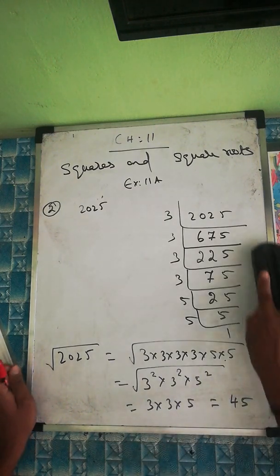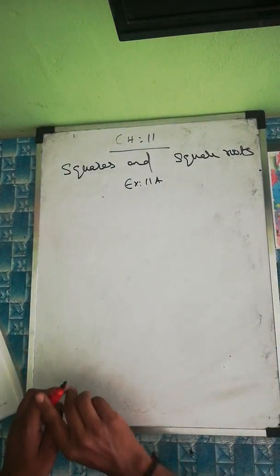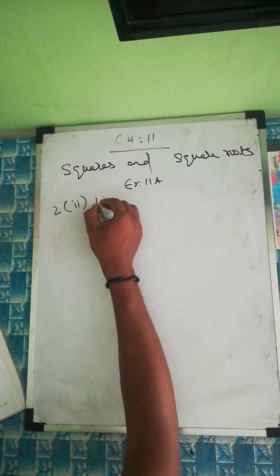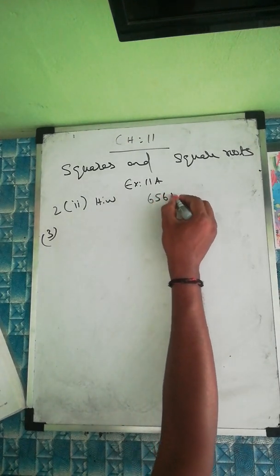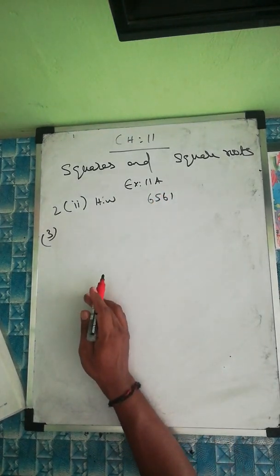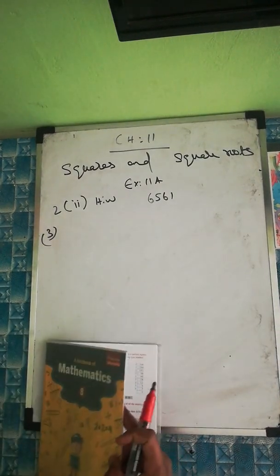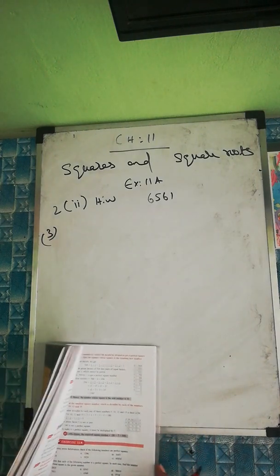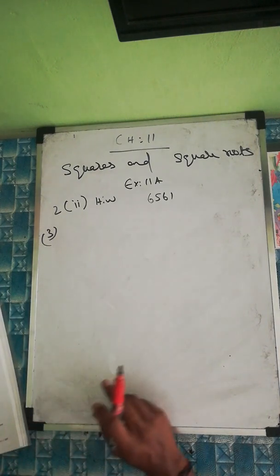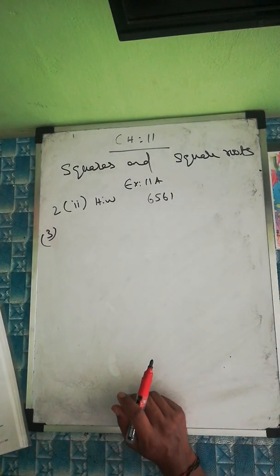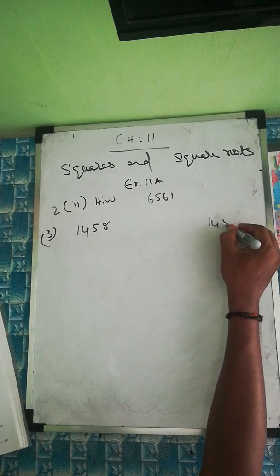The second part of question 2, which is 6561, is your homework — try it yourself. Now moving to question number 3: find the least number by which the given number should be multiplied to get a perfect square number, and in each case find the number whose square is the resulting new number. The first number is 1458.